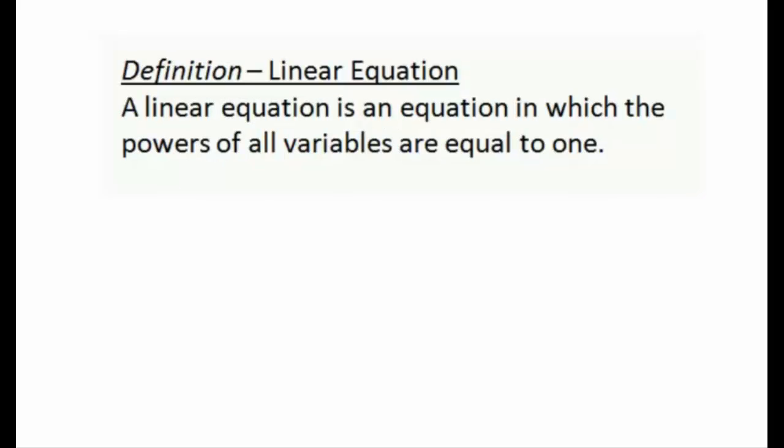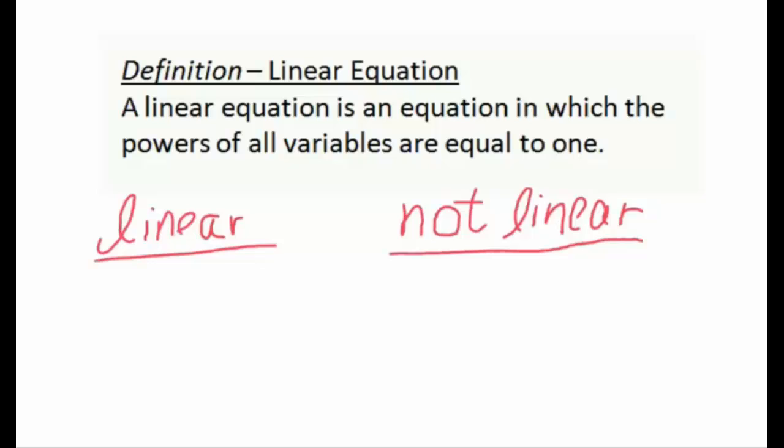Inside this lesson we're going to take a look at what are called linear systems and we're going to see how we can use matrices to talk about linear systems. The first thing I want you to understand is what's called a linear equation — this is any equation where we have some variables but all of the powers of our variables have to be equal to 1. Let's take a look at some examples of equations that are linear and some that are not.